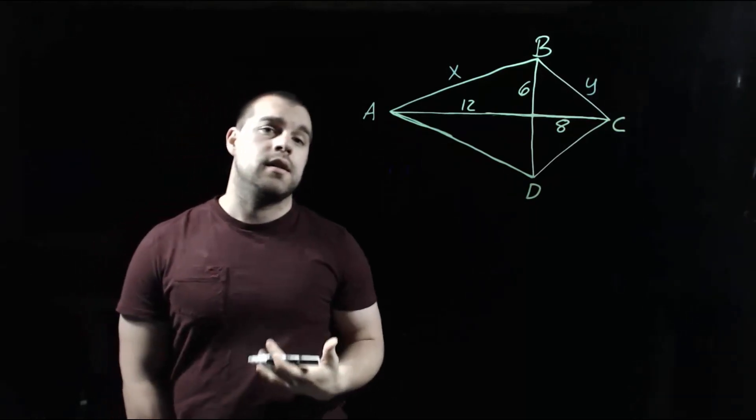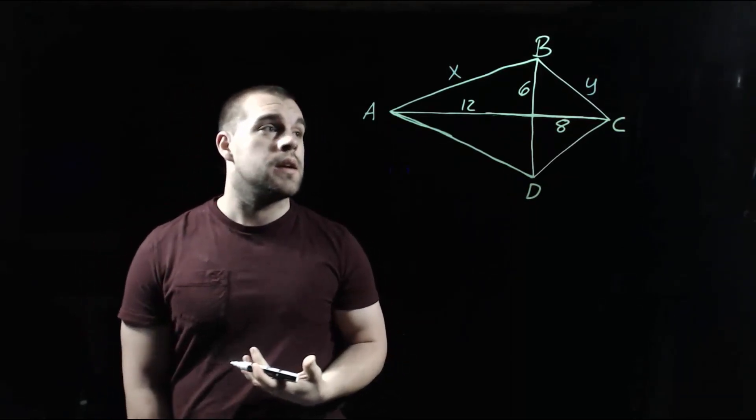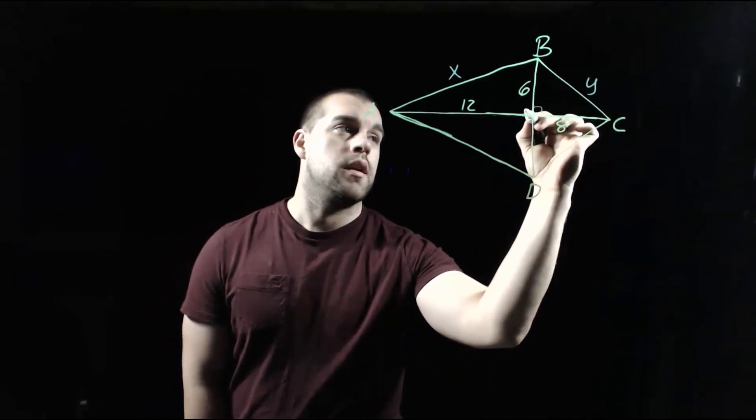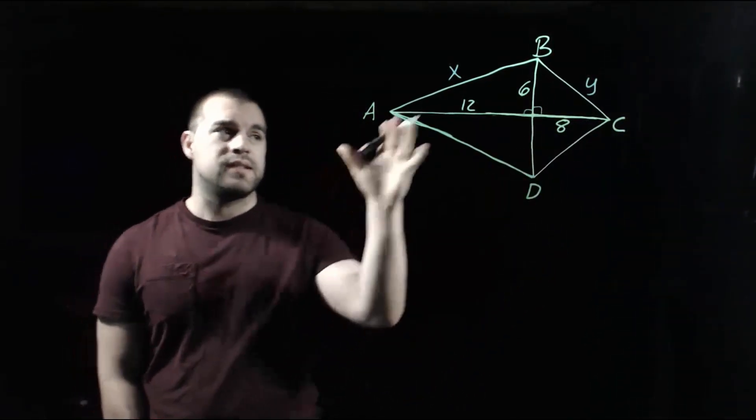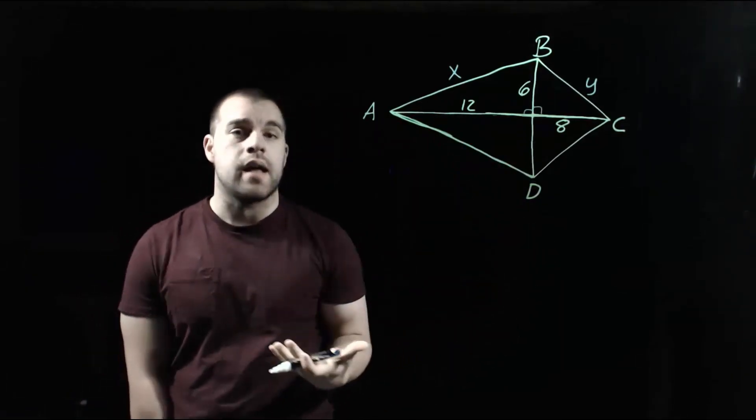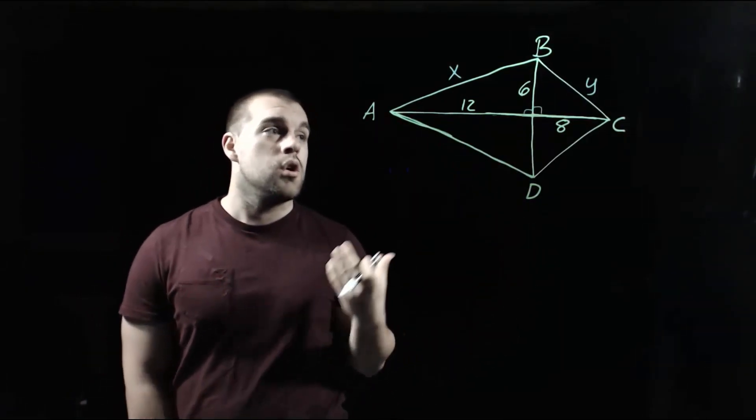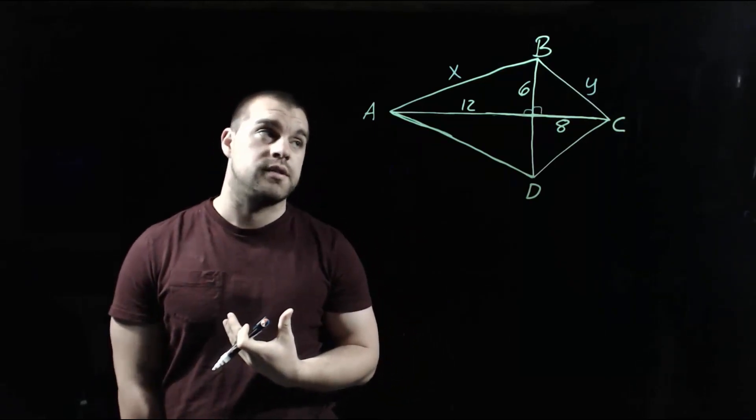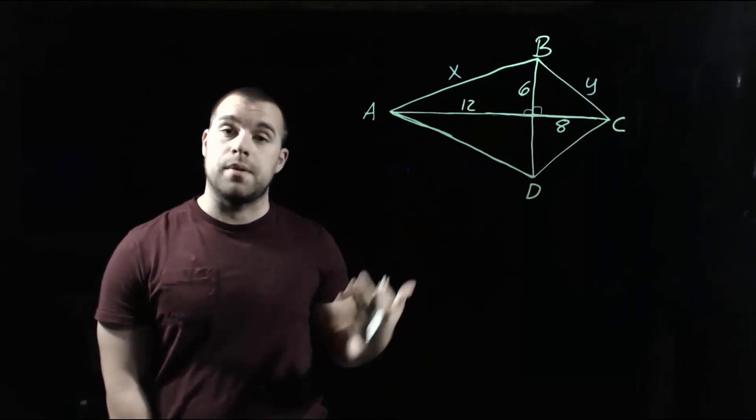In order to find these lengths, we're going to have to use the idea that the diagonals are perpendicular. So we've got right angles within our picture. And if we kind of separate this out in our mind, what we've got are some right triangles. We've got two sides of the right triangle. We're going to try to find the missing third side. So this takes us back to the Pythagorean theorem.